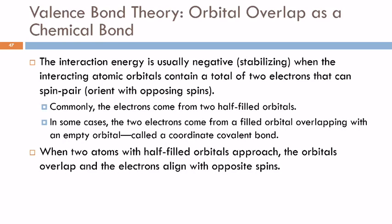They're going to orient with opposing spin. So just like we saw in an individual atom, where if there's two electrons in an orbit, they spin pair one up and one down. In this bond, this orbital overlap, the ideal thing is two electrons, one spin up and one spin down.